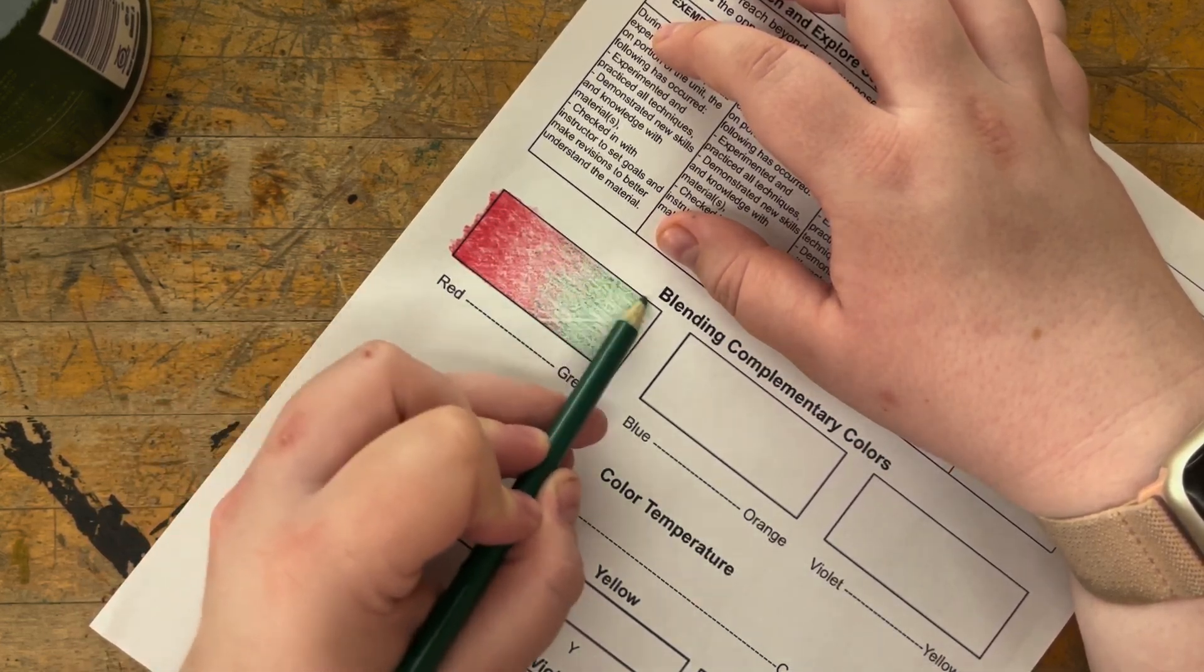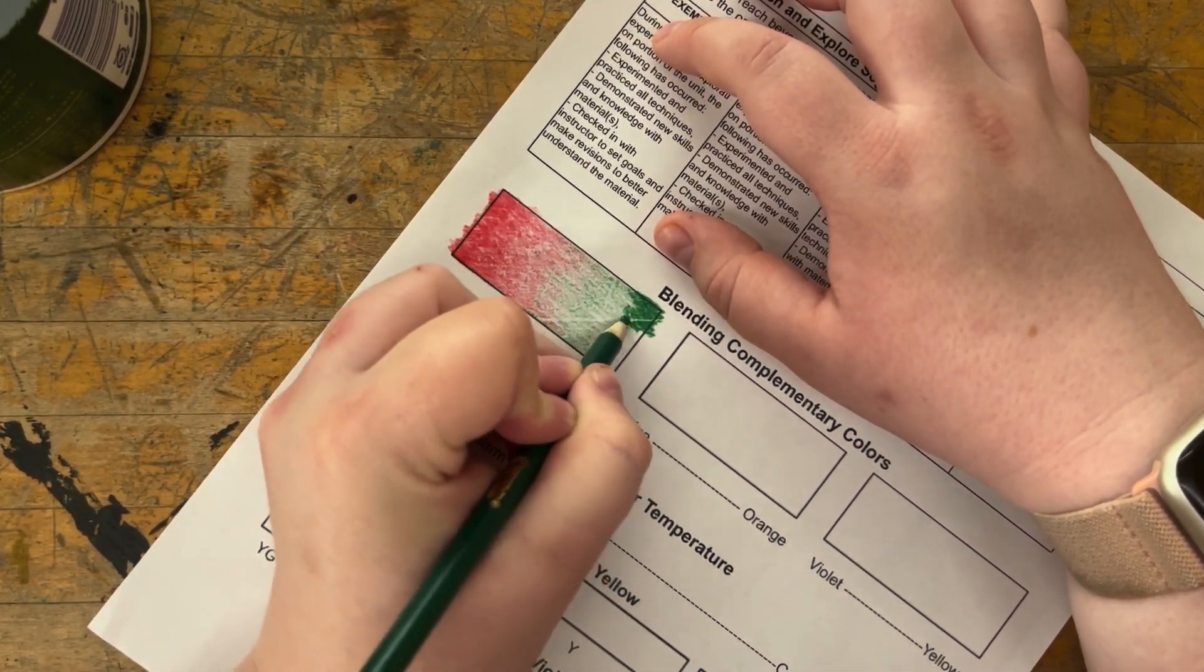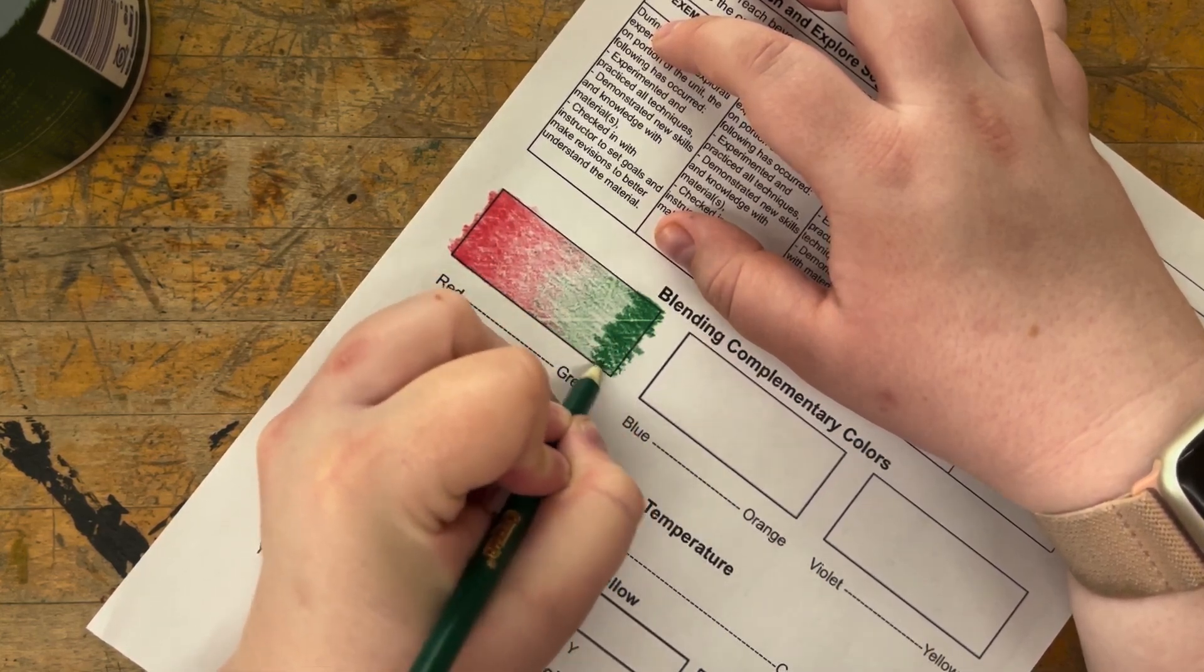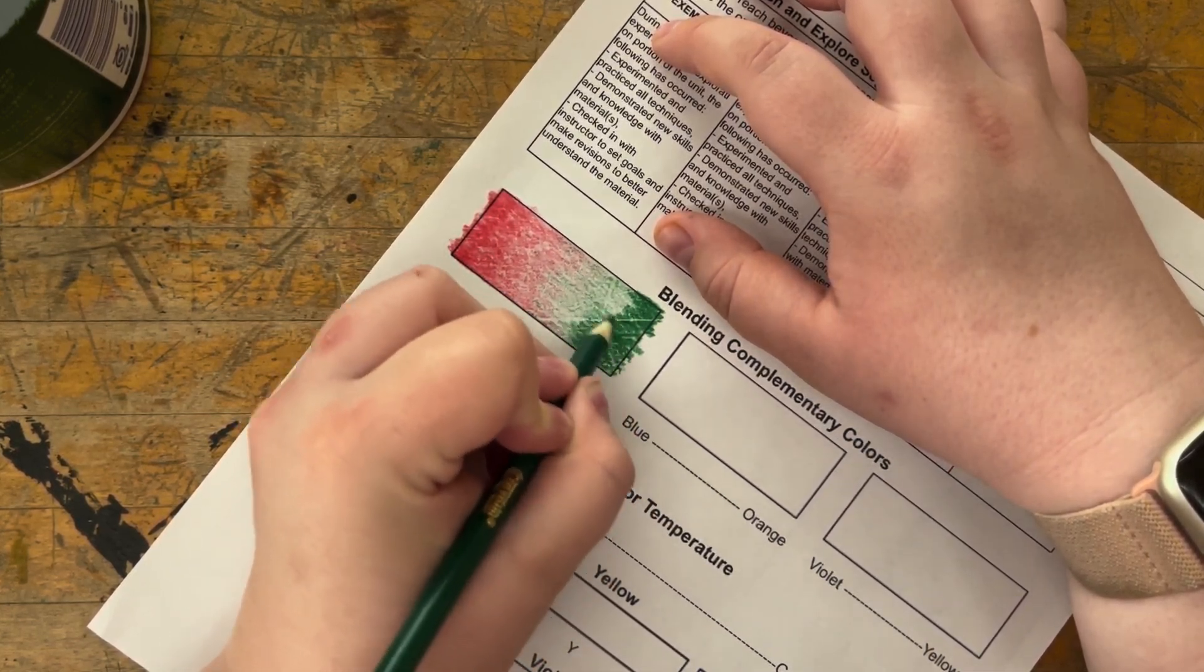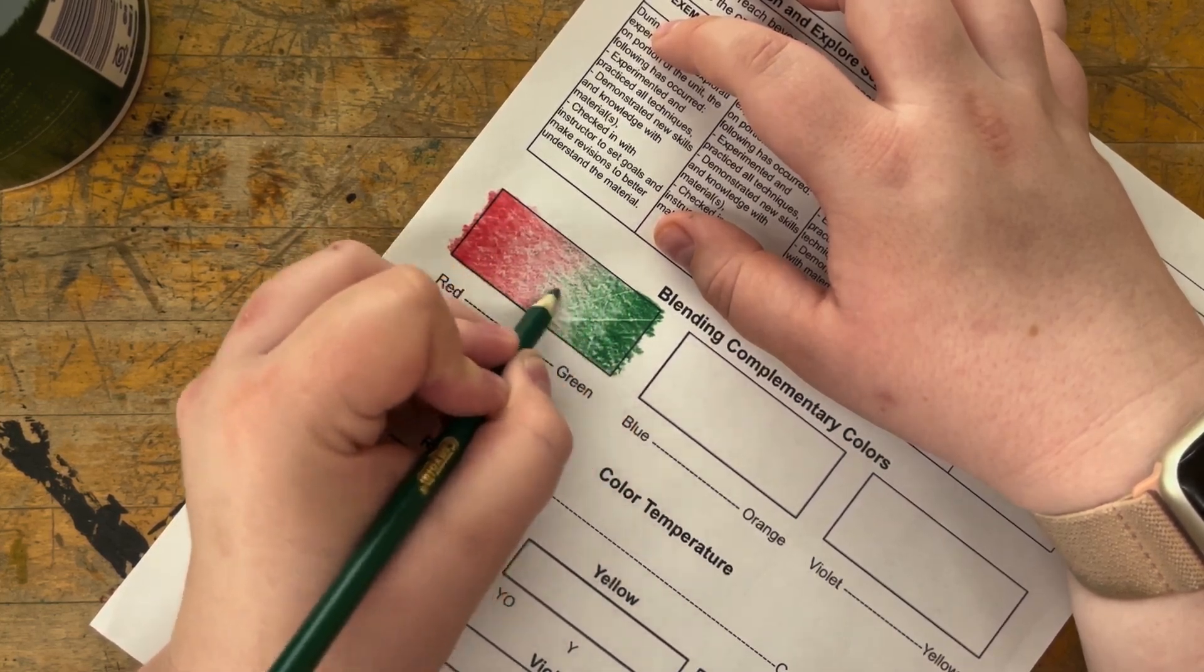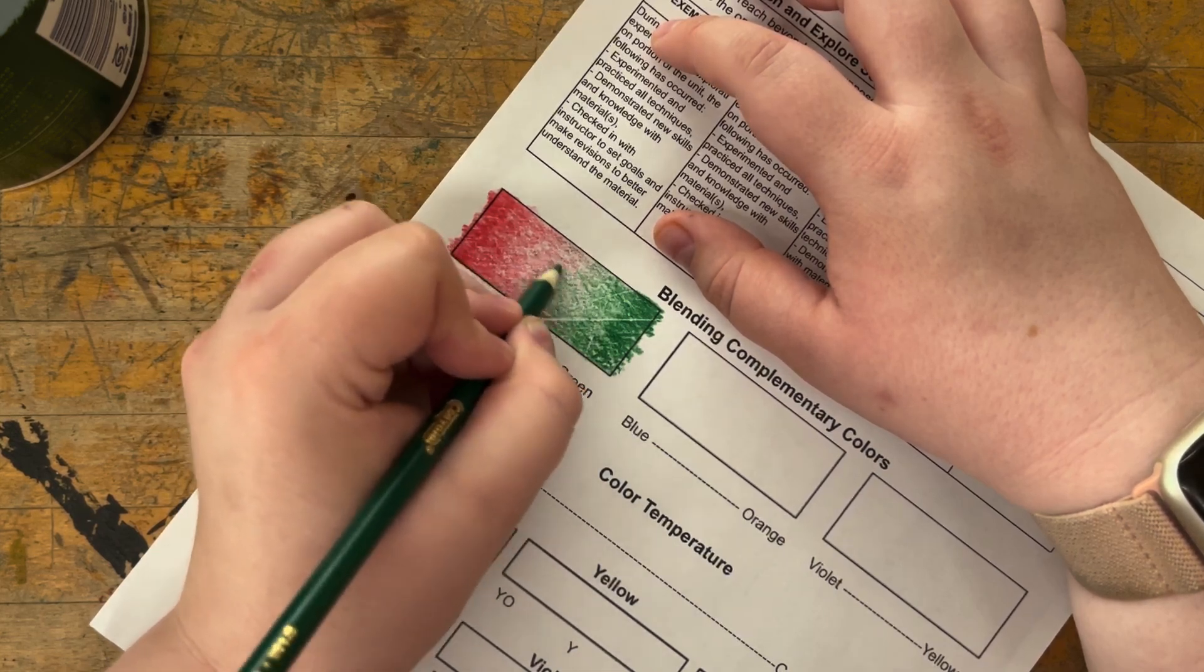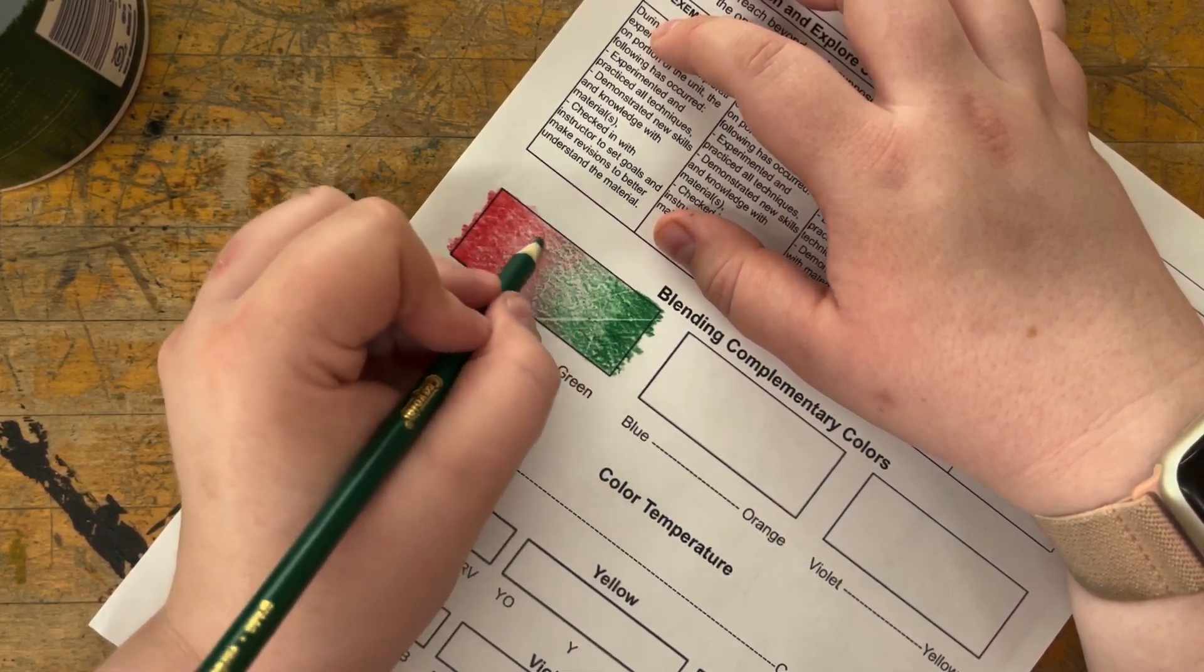Once you have that started, then you're going to start to gradiate your pressure. So looking at the very far end with red, I'm going to use almost as firm as I usually go with colored pencils. And then as I get closer and closer to that middle, I'm going to bring it down to 80 percent, 60 percent, 40 percent, 20 percent, and then not at all.